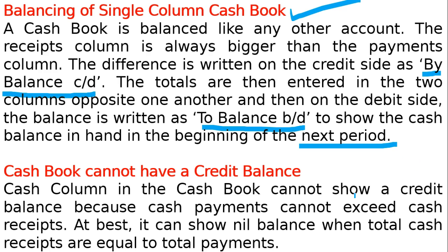The cash column in the cash book cannot show a credit balance, because cash payments cannot exceed cash receipts. At best, it can show a nil balance when total cash receipts are equal to total cash payments. For example, if you have 10,000 rupees, you cannot pay more than 10,000. If you pay less, you will have a debit balance.